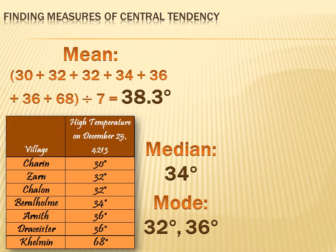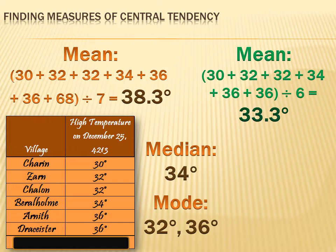The problem is that the outlier in Kelnan is messing up the mean. So if we eliminate Kelnan and find the mean without that outlier, the mean without the outlier is 33.3 degrees. That's five degrees less than the mean with the outlier — five degrees might mean the difference between a heavy sweater and a light sweater. So the outlier messed up the mean.